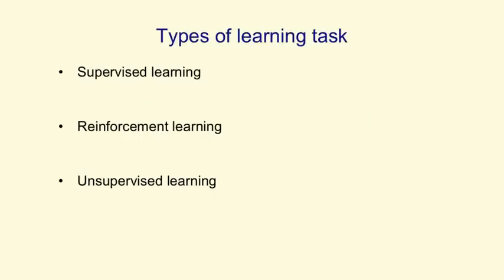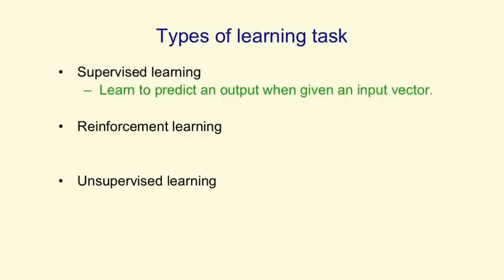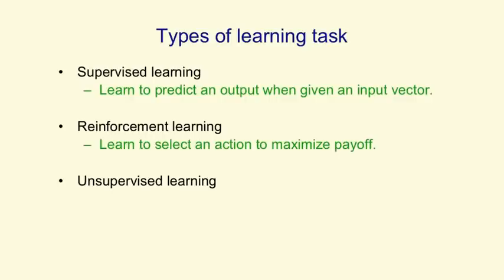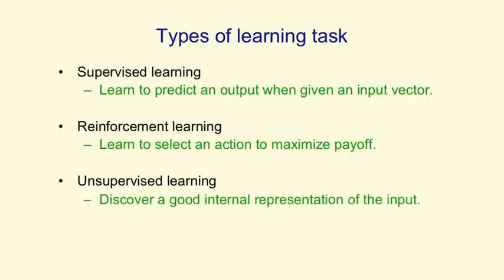Learning can be divided into three broad groups of algorithms. In supervised learning, you're trying to predict an output when given an input vector. In reinforcement learning, you're trying to select actions or sequences of actions to maximise the rewards you get, and the rewards may only occur occasionally. In unsupervised learning, you're trying to discover a good internal representation of the input, and we'll come later to what that might mean.